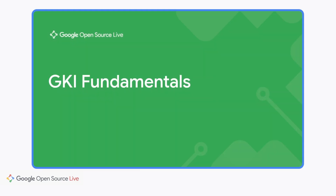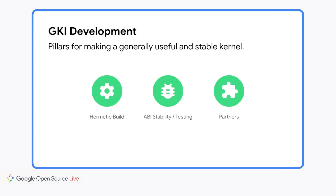Let me give you a brief overview of how GKI is developed. In order to achieve the GKI goals, such as adaptability and innovation, and to support the single source, single binary approach, some technologies needed to be developed. First of all, we needed to ensure a hermetic and deterministic build — without that, any guarantees about binary stability are just unreasonable.